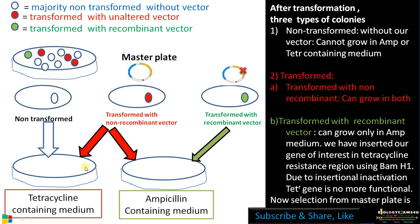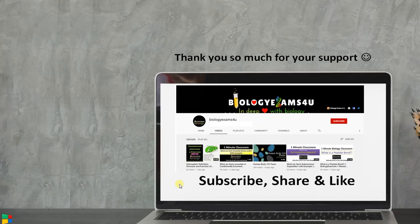So the colony which cannot grow in tetracycline containing medium but can grow in ampicillin containing medium is a recombinant colony. By comparing these plates with the master plate, it is very easy to pick out the recombinant colonies for further subculturing. Hope things are clear — thank you so much for your support. You are with biologyexams4u.com.